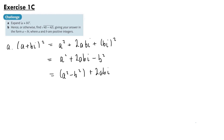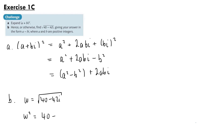Part b says hence or otherwise find the square root of 40 minus 42i, giving your answer in the form a minus bi where a and b are positive integers. So if we call the complex number w the square root of 40 minus 42i, then we have that w squared is equal to 40 minus 42i.